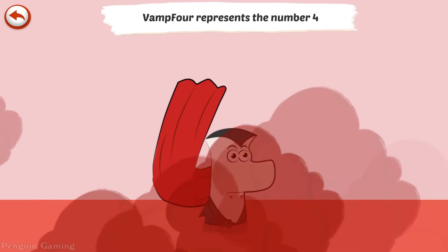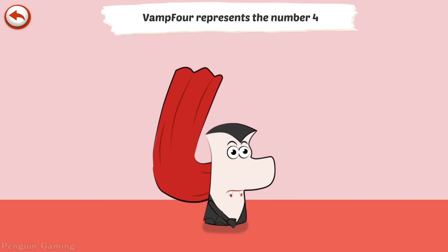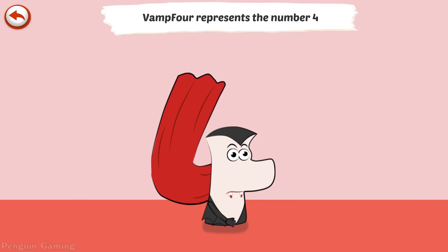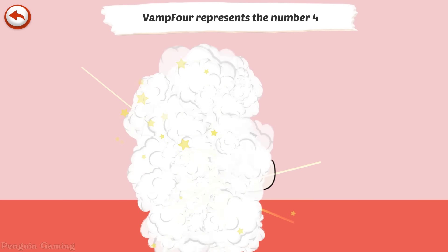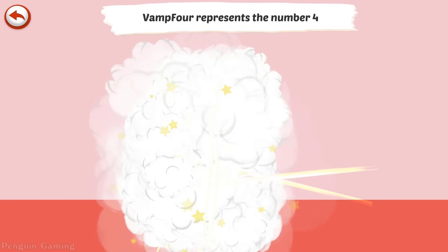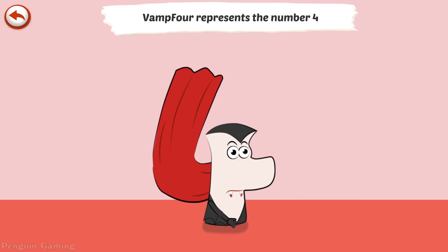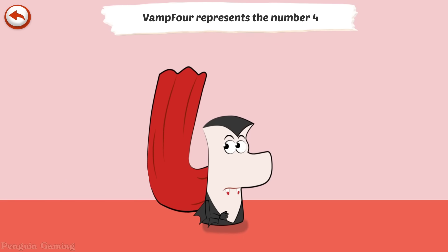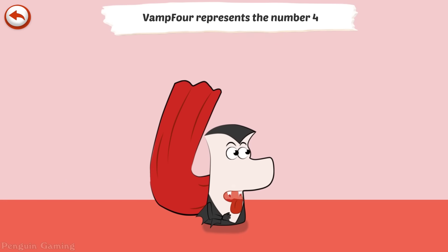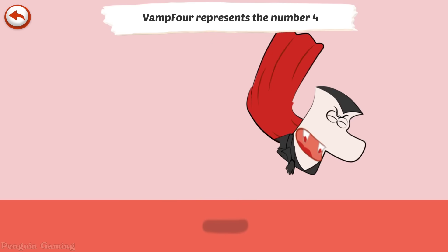Vamp Four represents the number 4. Vamp Four is a vampire who loves biting all that is around him.